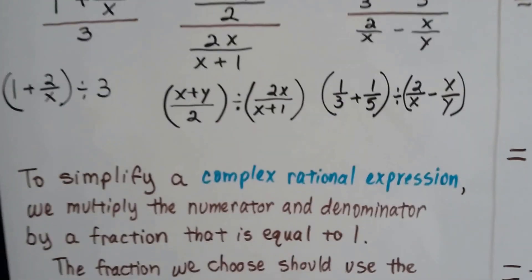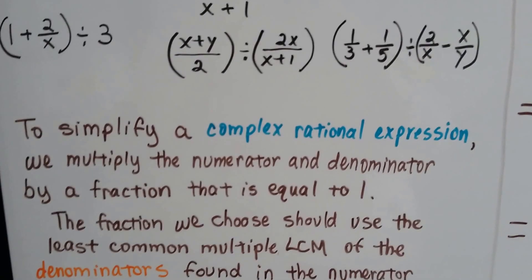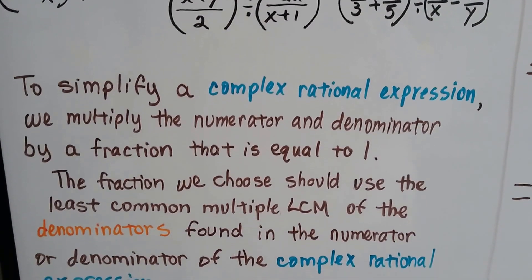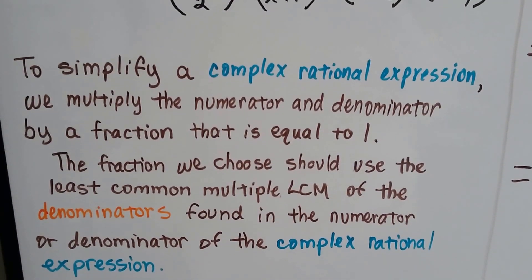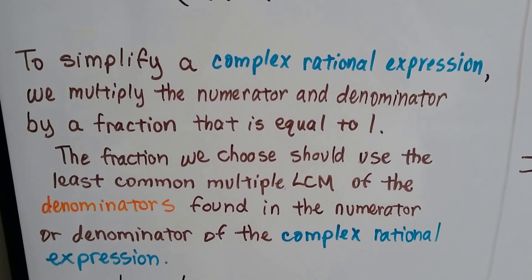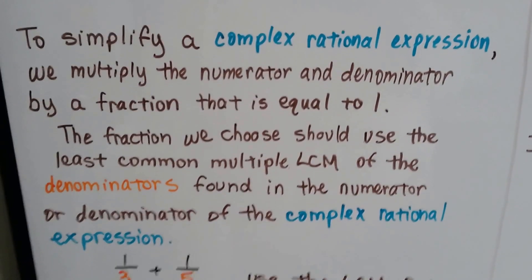And 1 third plus 1 fifth is divided by 2 over x minus x over y. And to simplify a complex rational expression, we multiply the numerator and denominator by a fraction that's equal to 1 — where the numerator and denominator are the same, so the fraction equals 1.